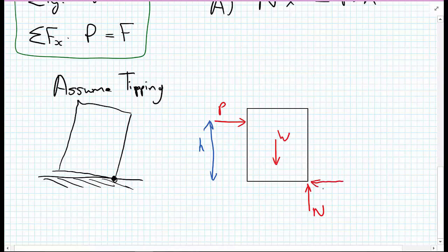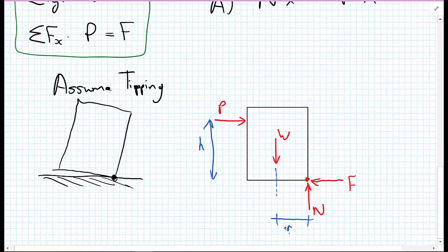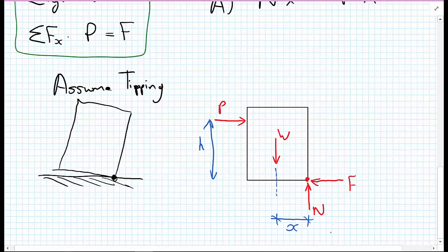The normal force has to act here, and also because this is the only point of contact, the friction force F must also be acting at this point. We have the point of action of W, and we have a distance between that and where the normal force is acting. This X now is equal to half of the width or breadth of the box, so B upon 2.